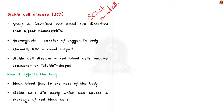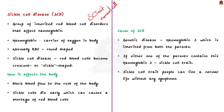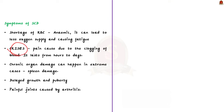Symptoms of sickle cell disease generally do not occur until the age of 4 months. Common symptoms include shortage of RBCs making the patient anemic, leading to fatigue due to less oxygen supply. A characteristic symptom is pain caused by clogging of blood, technically called a crisis, which can last from hours to days. Other symptoms include chronic organ damage such as spleen damage, delayed growth and puberty, and painful joints caused by arthritis. Symptoms may differ according to which organ is blocked by the sickle cells.